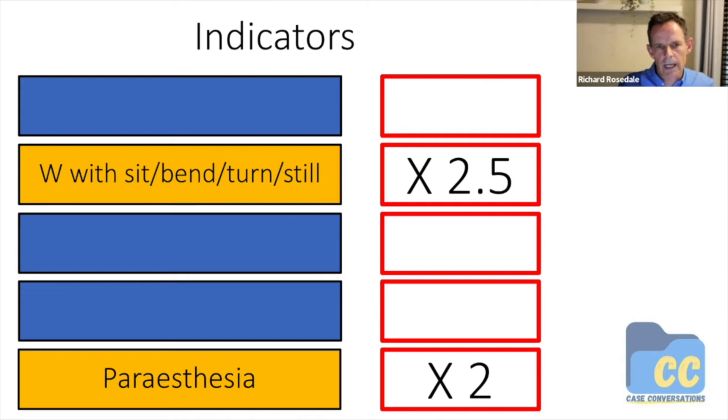So if we look at the indicators from the second study we did from the history, we have these two indicators. From the analysis, these indicators came out as being helpful to tell us that the problem was coming from spine. Worse with sitting, bending, turning, or when still, or paresthesia, and that's how much they increase the probability of it being spinal.